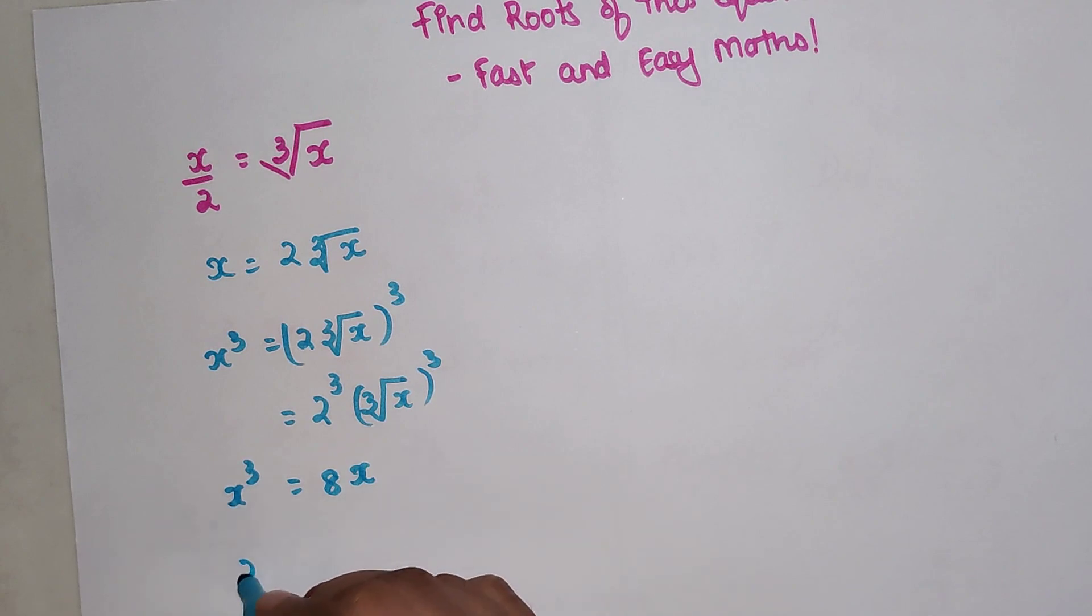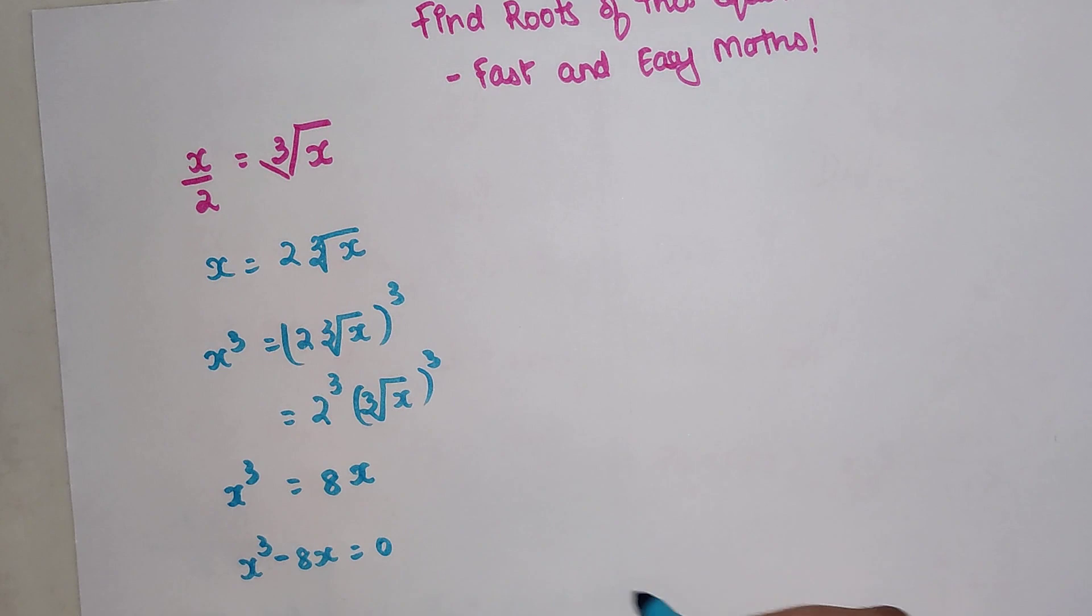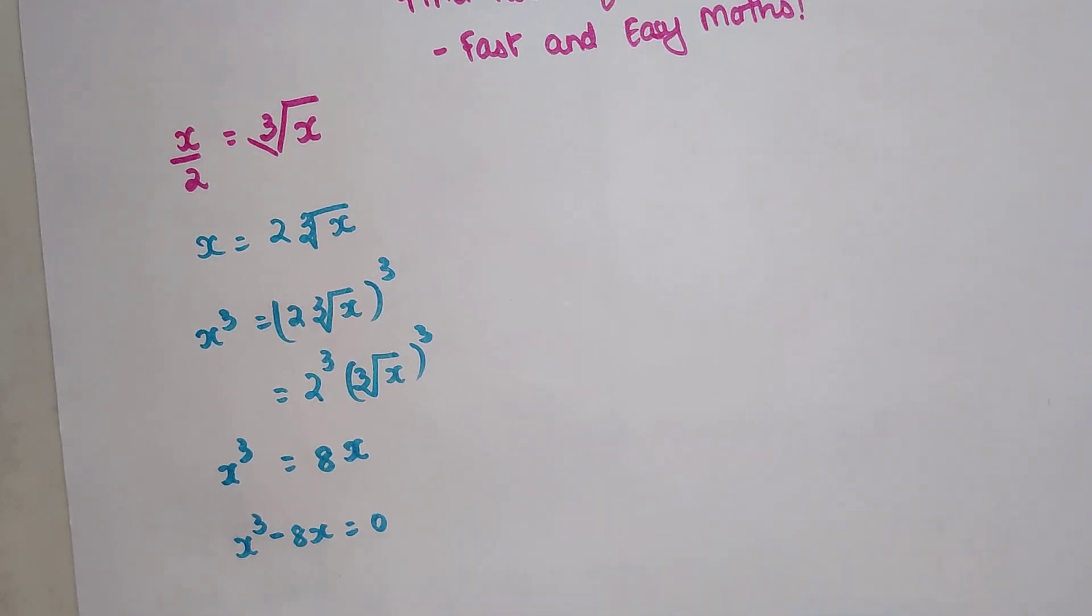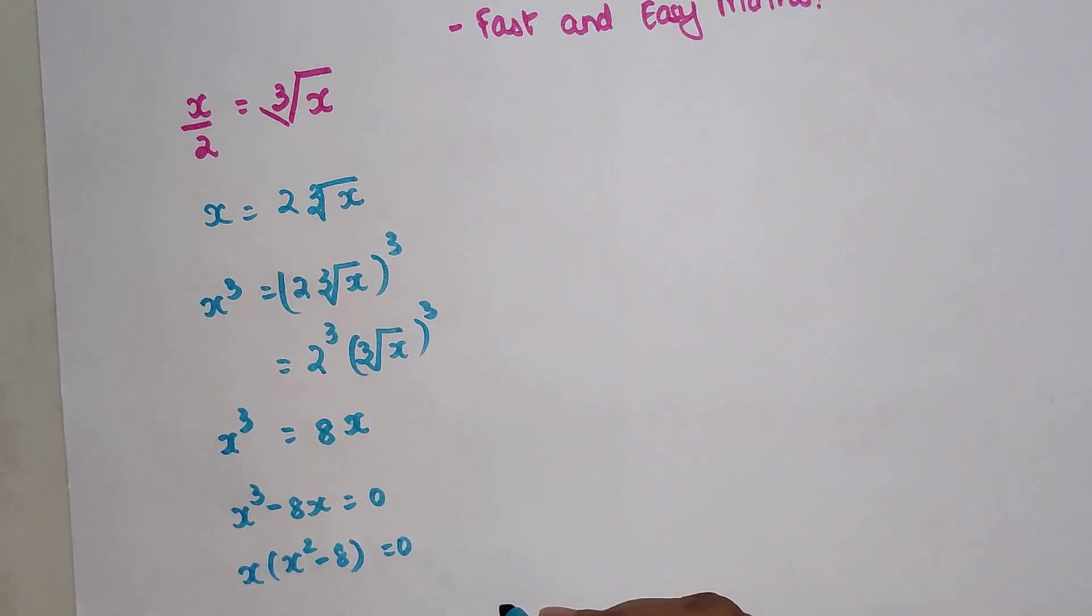Now students, what we can do is we can take this on the other side, so I get x cubed minus 8x equals 0. Now taking common x, I have x times (x squared minus 8) equals 0.